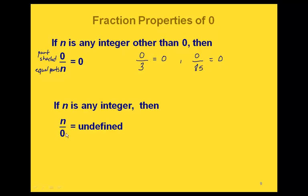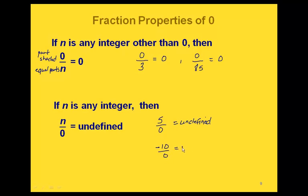If we have some integer on the top and 0 as our denominator, remember that the fraction bar is the same as division. We can't divide by 0, so this is undefined, no matter what the value on top is. For example, 5 over 0 is undefined, and negative 10 over 0 is also undefined. The easiest way to remember this: the fraction bar is division, and we can't divide by 0.